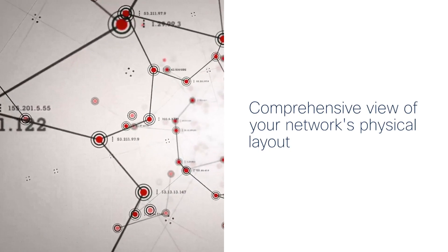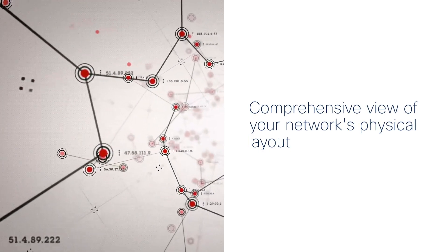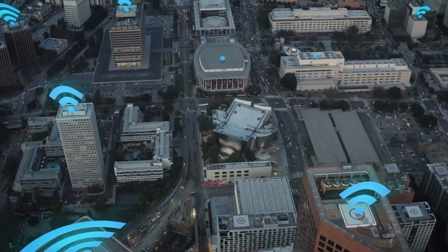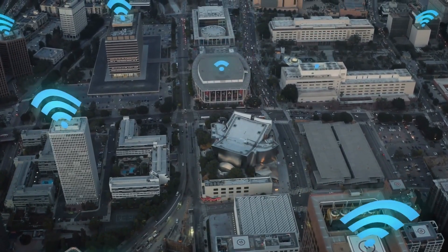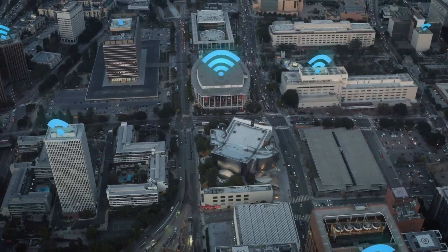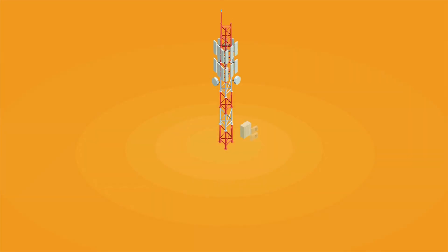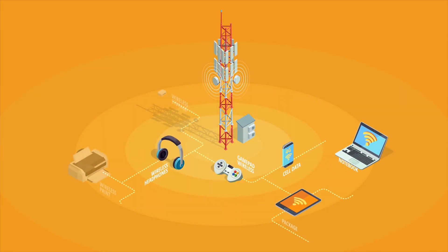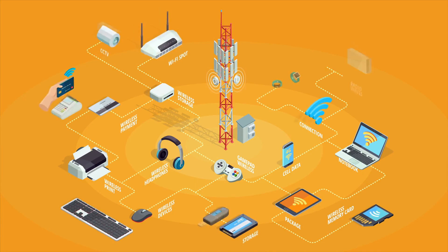Detect and Locate offers you a comprehensive view of your network's physical layout. From the fixed structure of your buildings to the strategic placement of your Wi-Fi access points, everything is at your fingertips. It's not just about the static elements — you'll also get a dynamic view of the Wi-Fi devices moving through your network.